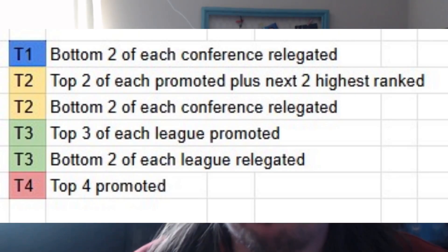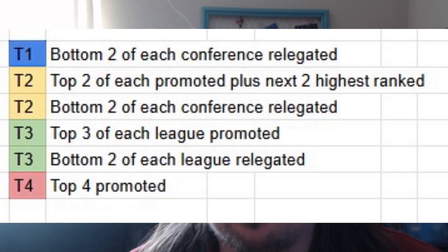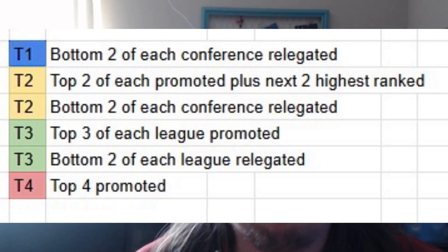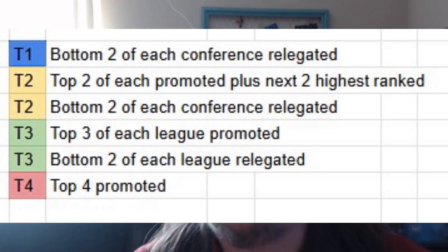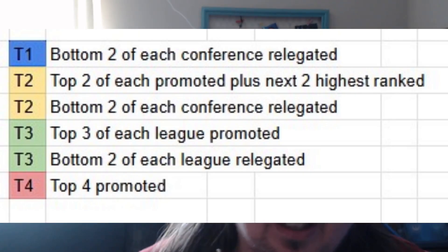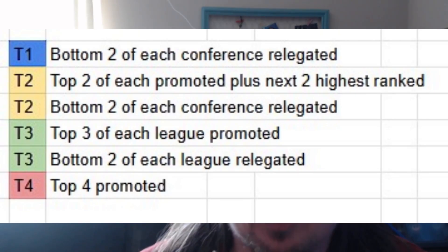The tier two conferences — the MAC, the Mountain West, and the PAC — the top two from each conference, plus the next two overall between the three conferences, so the next two teams in terms of power at the end of the season based on record and ranking depending on how the layout looks in NCAA 25, will be able to move up to fill all eight total spots.